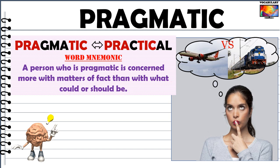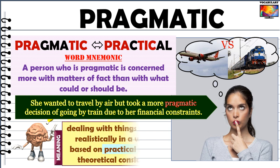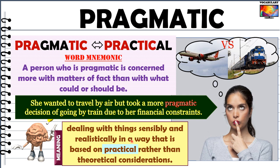As an example, look at the picture of a girl who is confused between two travel options — whether to travel by air or by train. Though air travel is faster, it is costly, especially if it's a last-minute decision to book a flight. If she doesn't want to spend much money and is financially low on resources, she'll take the more pragmatic or practical decision of going by train. A pragmatic person deals with things sensibly and realistically, based on practical rather than theoretical considerations.